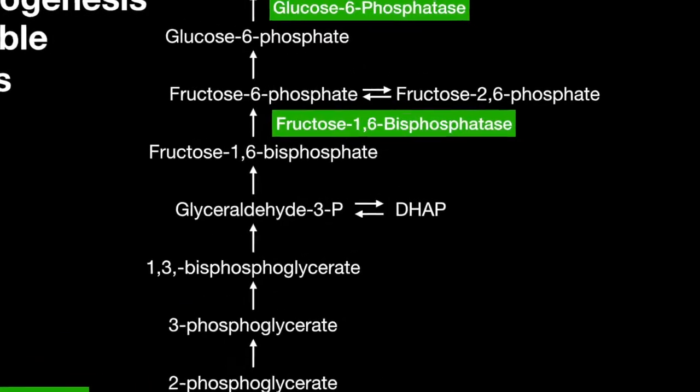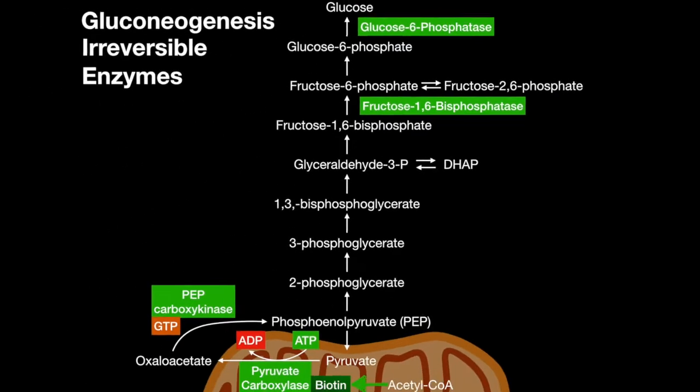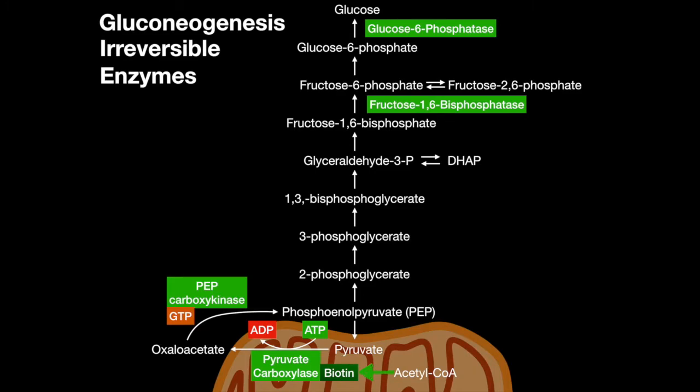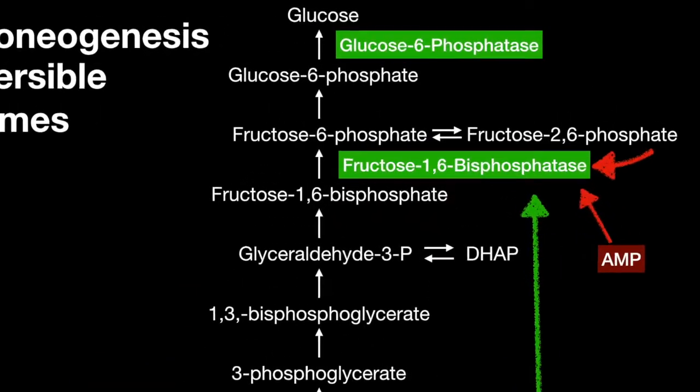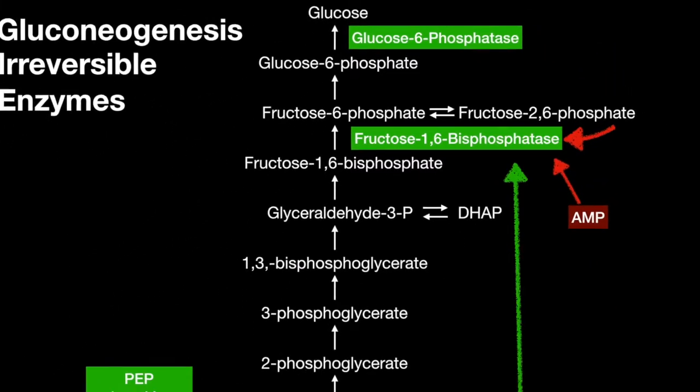Fructose-1,6-bisphosphatase turns fructose-1,6-bisphosphate into fructose-6-phosphate in the cytosol. This enzyme is activated by citrate but inhibited by AMP and fructose-2,6-bisphosphate. Glucose-6-phosphatase in the endoplasmic reticulum converts the final glucose-6-phosphate into glucose.